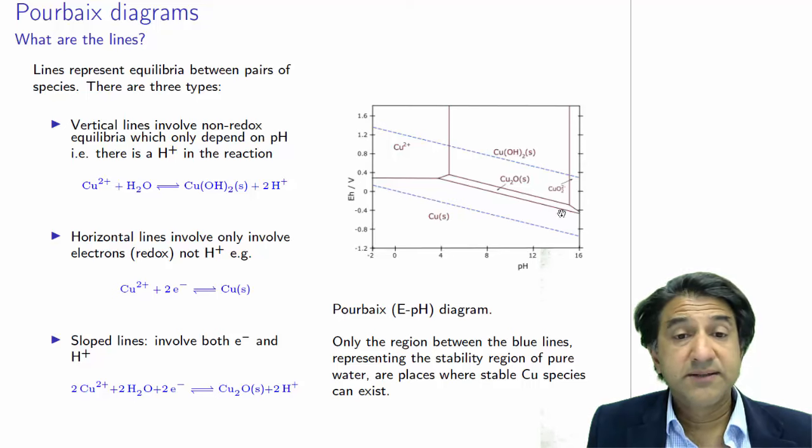Now, the other case, of course, is sloped lines. So we have here a couple of sloped lines with copper oxide. And here, we're looking at one particular sloped line. It involves both electrons and hydrogens. And you can often get that when you balance redox equations, as you know. So this is an equilibrium between Cu2+ and Cu2O.